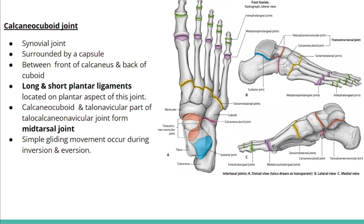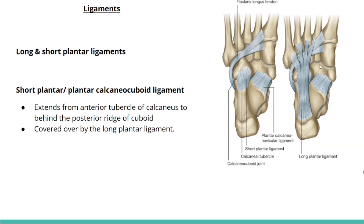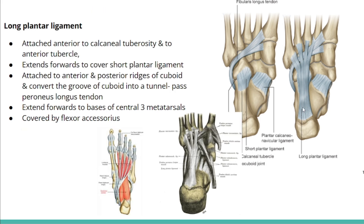There are two plantar ligaments: long and short. The short plantar ligament, or plantar calcaneocuboid ligament, extends from the anterior tubercle of the calcaneus to behind the posterior ridge of the cuboid. In the cuboid bone, a groove is made by the anterior and posterior ridges, and the short plantar ligament attaches behind the posterior ridge. This short plantar ligament is covered by the long plantar ligament, which attaches anterior to the calcaneal tuberosity and extends forward to cover the short plantar ligament.